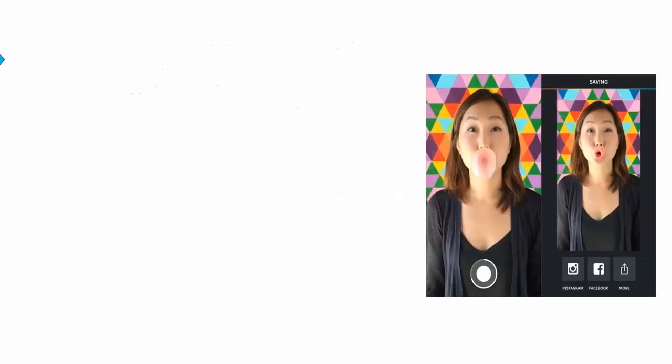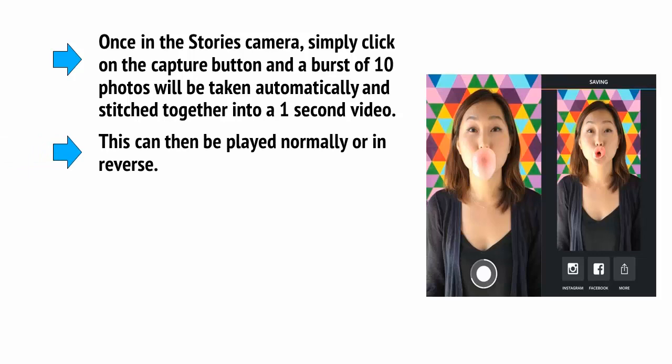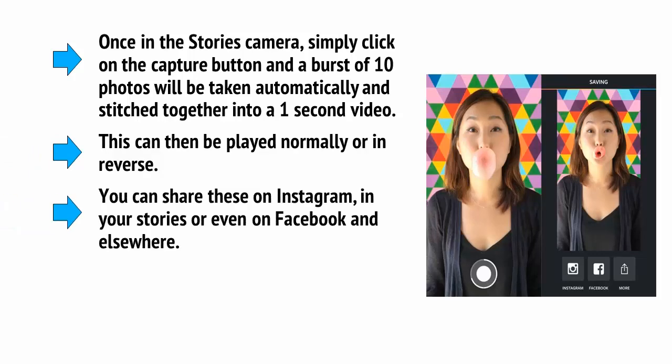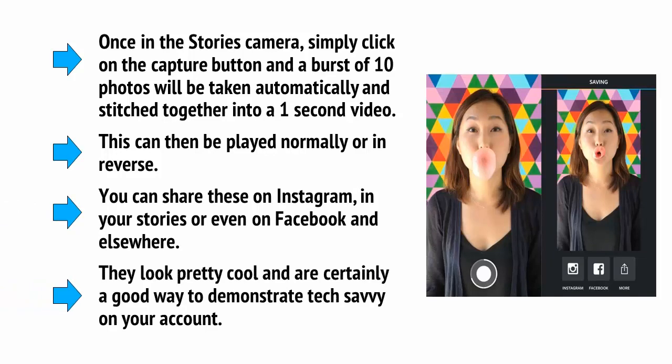You may notice that next to the live option is another option called boomerangs. This is another new feature which is quite interesting and is essentially a very short looping video. It works a lot like a GIF or perhaps the live photos from the iPhone 6s. Once in the stories camera, simply click on the capture button and a burst of 10 photos will be taken automatically and stitched together in a one-second video. This can then be played normally or in reverse. You can share these on Instagram, in your stories, or even on Facebook and elsewhere. They look pretty cool and are certainly a good way to demonstrate tech savvy on your account.